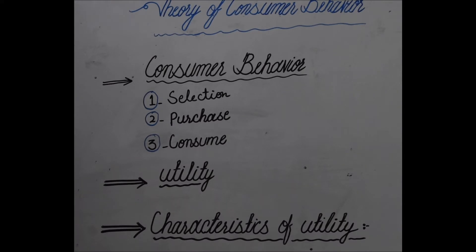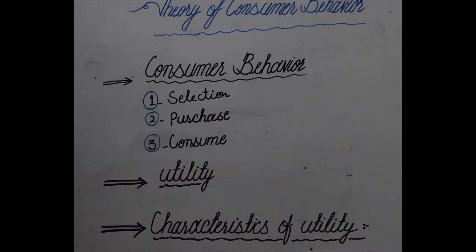In the consumer behavior section, we will talk about the steps — how many steps are included in consumer behavior. Then we will move towards the next section, which is utility: what is utility and what is the basic pattern of utility. Then we will move towards the last section, which is the characteristics of utility. So today our topic is divided into three main sections, with subsections included in the details.